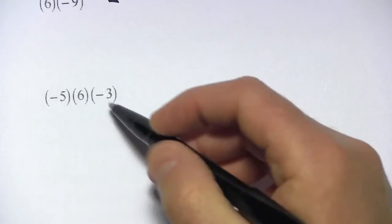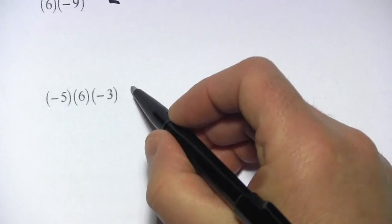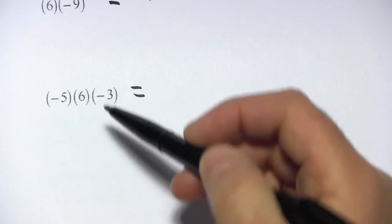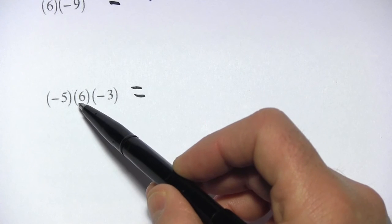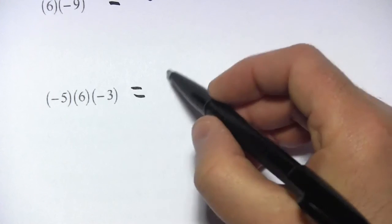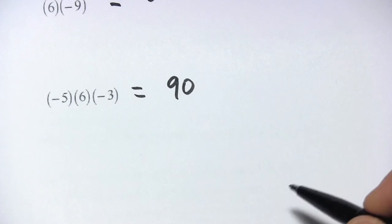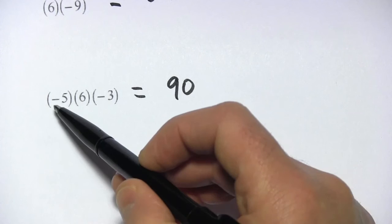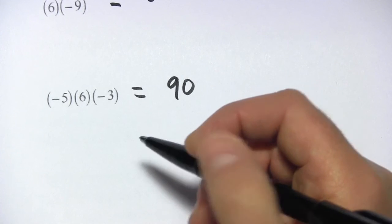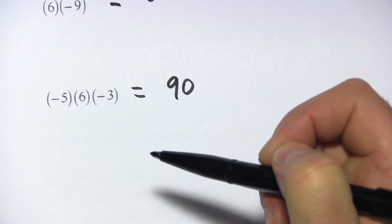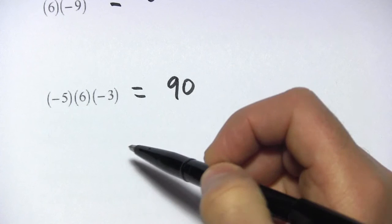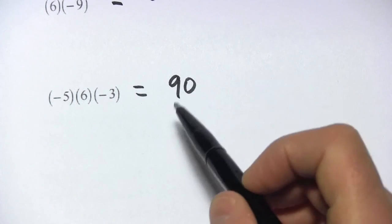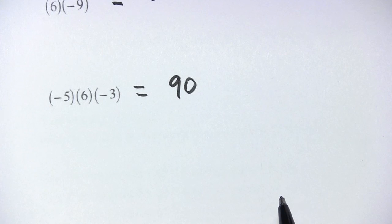Here we have a negative 5 times 6 times negative 3, well let's just do the number part first. 5 times 6 is 30 times 3, well 30 times 3 is 90, so the number part is 90. For the sign, I'm just going to count the number of negative signs, and I've got 1, 2 negative signs. Well, a negative of a negative is a positive, that's an even number of negative signs, so the answer is going to be positive, so 90 is our answer.